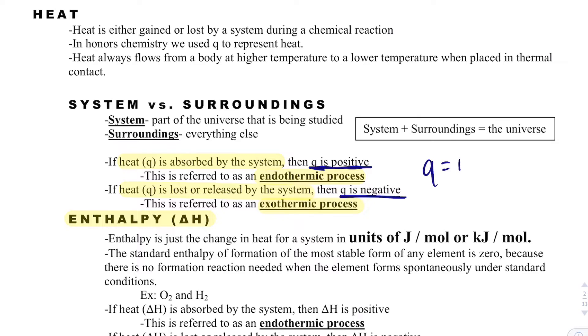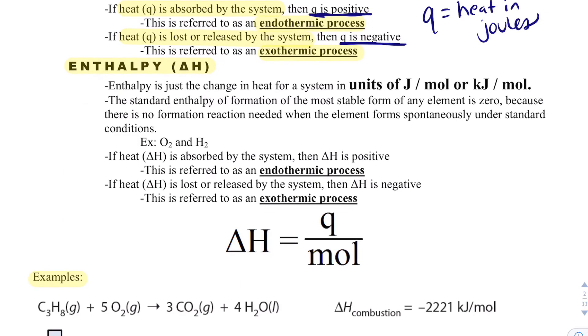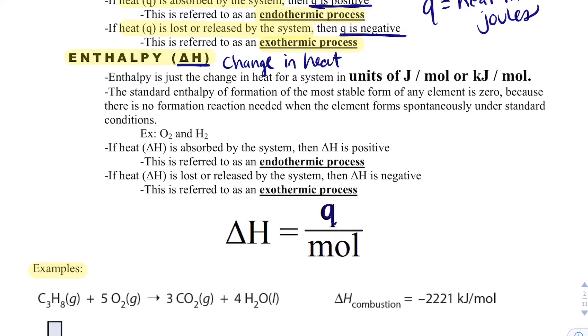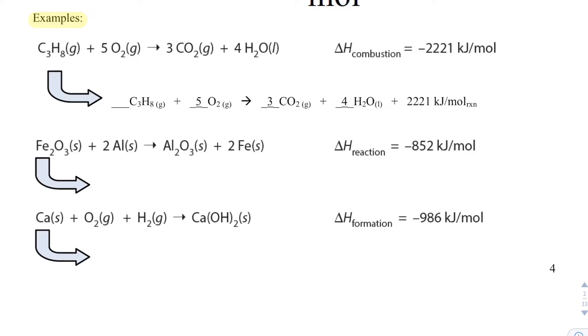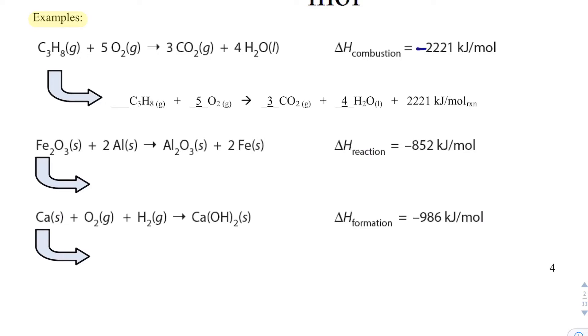Q is just heat in joules, but we'll commonly see enthalpy, which is delta H, or the change in heat, and that's going to be Q divided by your moles. Let's see how this would work. I want to know how to write this in a reaction. If my delta H is negative, then I've got my reactants over here, and heat is going out of the system or being produced, so these will be my products. The negative tells me what side of the reaction.